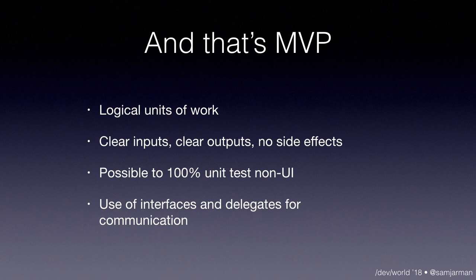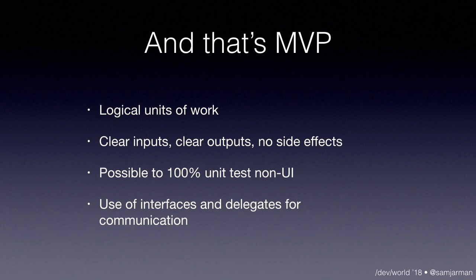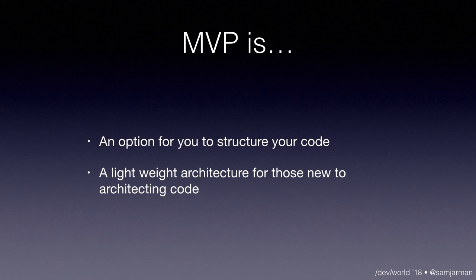So that's MVP. It's logical units of work with clear inputs, clear outputs, and no side effects. It's possible to nearly 100% unit test the UI — in that demo, all code paths were covered, probably about 98%. It uses interfaces and delegates for communication. MVP is still a valid option to structure your code — it's a lightweight architecture, a really good one for those new to architectures. There are more complex architectures, but this is a great starting point for thinking about architecture outside of the controller.